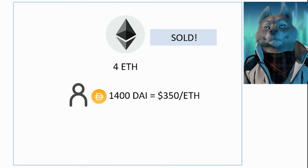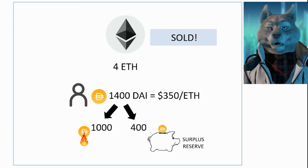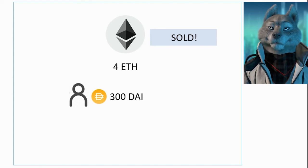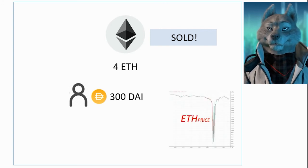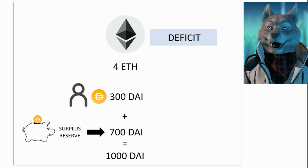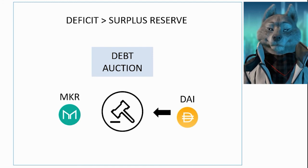If the auction ended with a final bid of 1,400 DAI for the 4 ETHs, it means the winner paid the equivalent of $350 per ETH. In that scenario, the 1,000 DAIs referring to the original loan will be burned and the surplus amount will go into a surplus reserve, which can be used in problematic scenarios. For instance, if the auction ended with only 300 DAI for the 4 ETHs — which could happen if the market is experiencing a flash crash — the debt has not been paid, creating a deficit in the system. The first candidate to cover this deficit is the surplus reserve, which is also fed by the interest rates charged on loans. If large deficits occur that the surplus reserve cannot cover, a debt auction is started where MKR tokens are issued and auctioned to cover the debts in DAI.